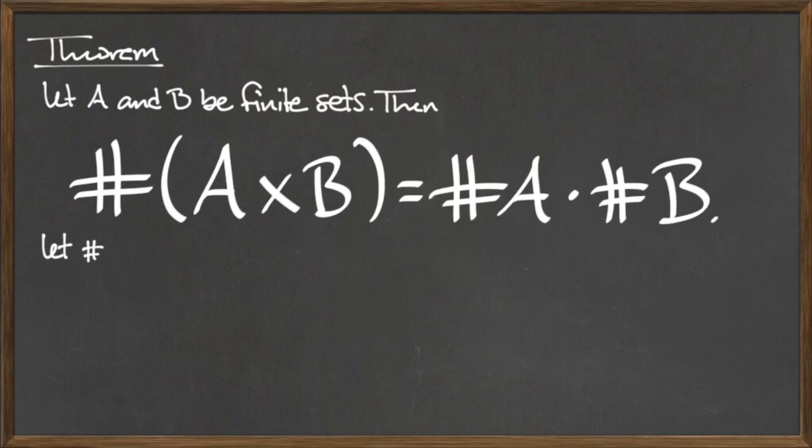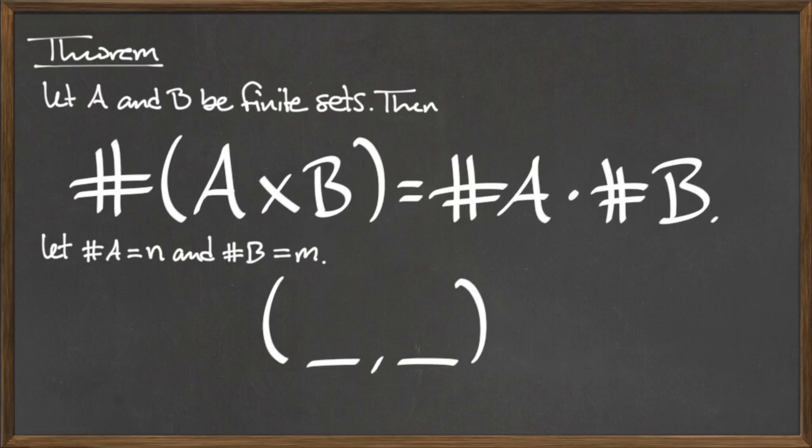To see why this is true, let the cardinality of A be equal to N, and let the cardinality of B be equal to M. Remember that an element in the Cartesian product is an ordered pair, where the first component comes from the set A, and the second component comes from the set B.